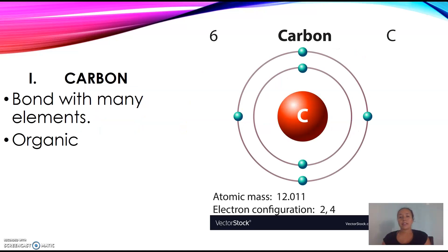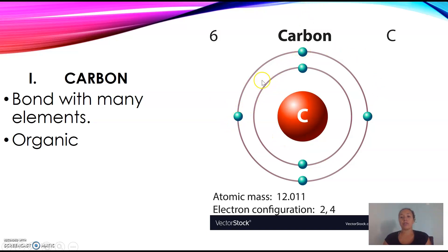It all begins with carbon. Carbon is an element that can bond with many elements and is said to be organic, meaning it's found in all living things. If you look at the outer shell of carbon, there are four electrons. These electrons like to share with other elements, so carbon bonds here, here, here, and here.